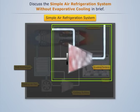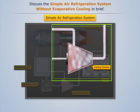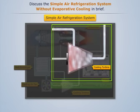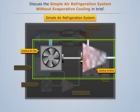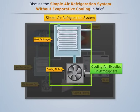This cold compressed air is then sent to the cooling turbine, where it gets expanded to the cabin pressure, thereby reducing its temperature well below the cabin temperature. Ideally, this expansion process is considered isentropic in nature. The work produced by this turbine is used to run the cooling fan, which draws the hot cooling air from the heat exchanger and expels it into the atmosphere.